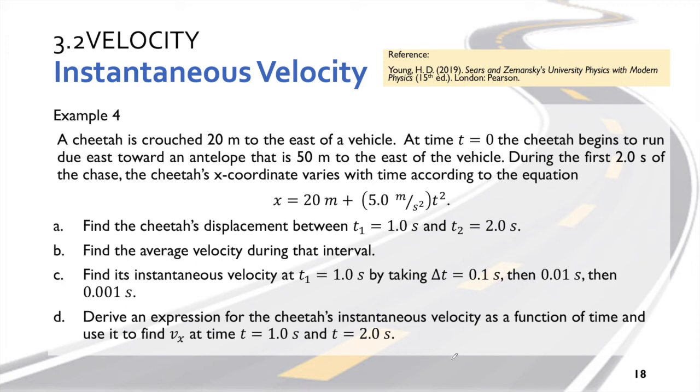Now let's discuss how to solve instantaneous velocity if we have an equation. Here in our example, a cheetah is crouched 20 meters to the east of a vehicle. At time t=0 the cheetah begins to run due east towards an antelope that is 50 meters to the east of the vehicle. During the first two seconds of the chase, the cheetah's x-coordinate varies with time according to the equation.